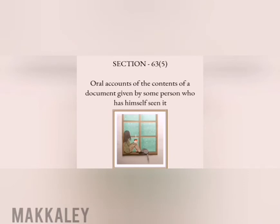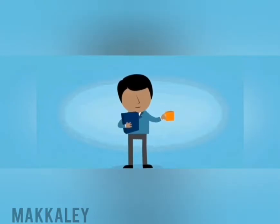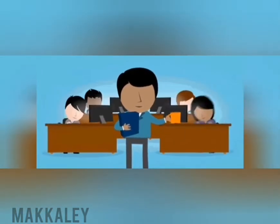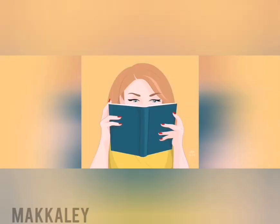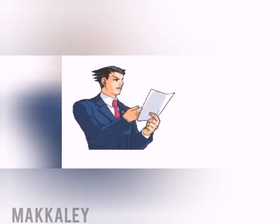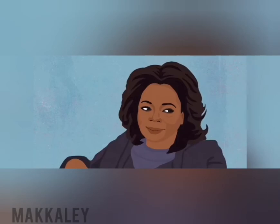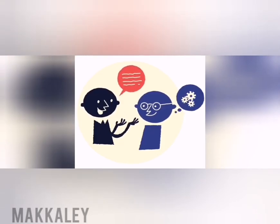The fifth and final type of secondary evidence is an oral account of the contents of a document given by some person who has himself seen it. The term 'seen' is very important — it means a person has seen, examined, and read the document. Because if a related person reads the document but cannot examine it, and another person tells the contents based on what they were told, that is hearsay evidence and will not be accepted. Hearsay evidence is never accepted.